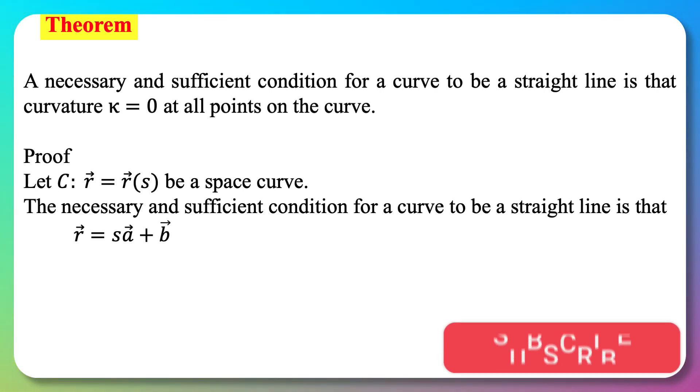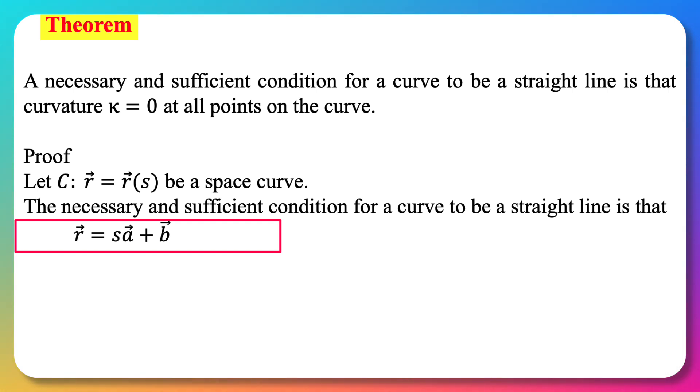So the position vector r equals s vector a plus b, where a and b both are constant vectors.